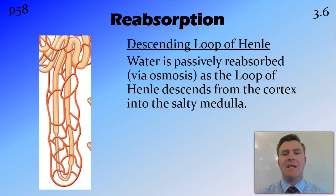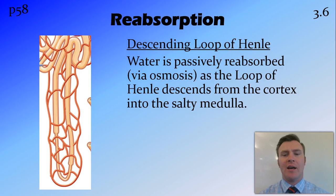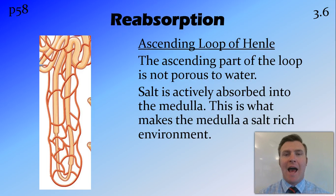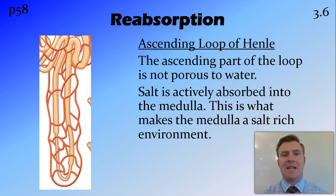Moving down into the descending loop of Henle, water moves through osmosis from the tubule back into the bloodstream, because the medulla is very salty. The ascending loop of Henle, on the other hand, is not porous to water — water can't pass across it — but salt is actively pumped from the ascending loop of Henle into the medulla, and that's what creates the salt-rich environment that draws the water out in the descending loop of Henle.